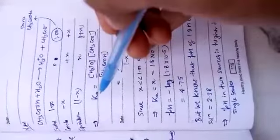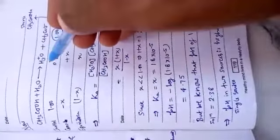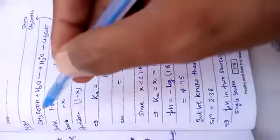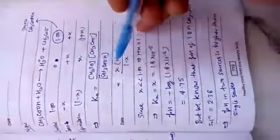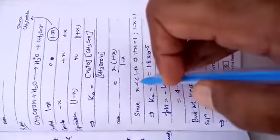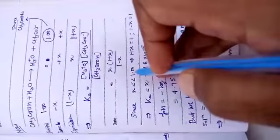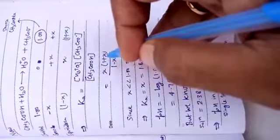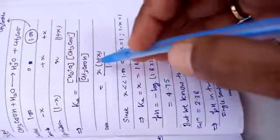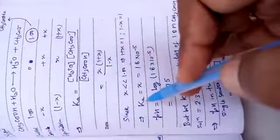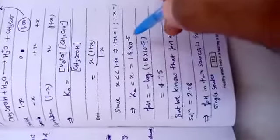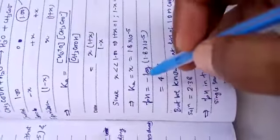Now what is the equilibrium constant? Ka is the concentration of the product H3O+ times acetate ion divided by concentration of reactant. You see here, x multiplied by 1 plus x divided by 1 minus x. Since x is very very less than 1, hence 1 plus x will be treated as 1, and 1 minus x will be treated as 1. Hence after putting this value as 1 and this value as 1, Ka is equal to x, which is given as 1.8 into 10 raised to power minus 5.